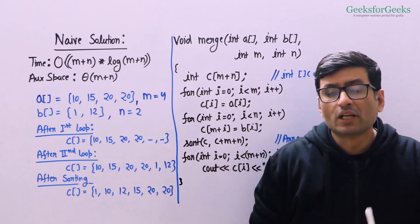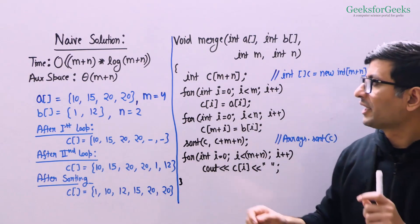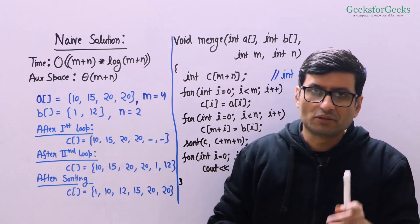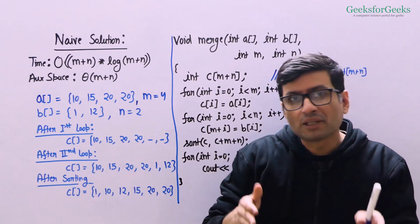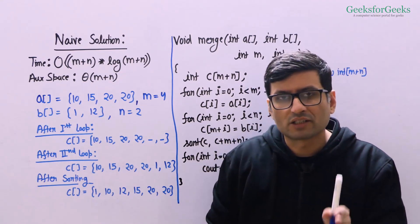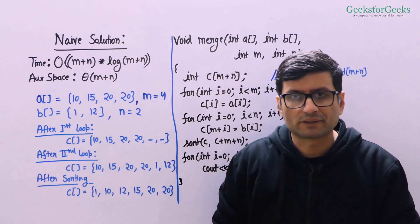Now please pause this video and try to think of a solution that works in linear time — Theta(m+n) — and requires only O(1) auxiliary space.